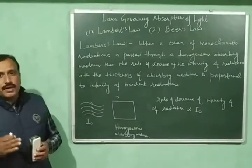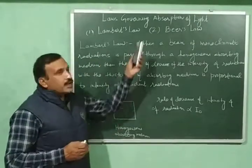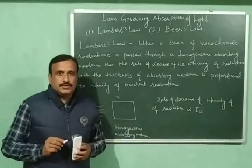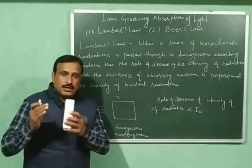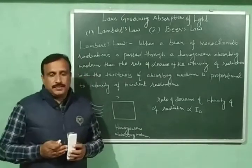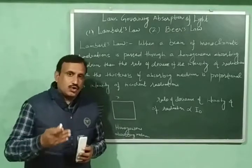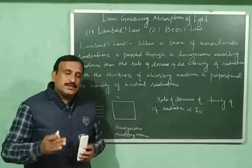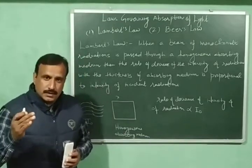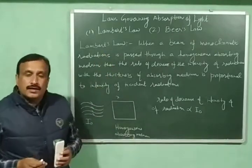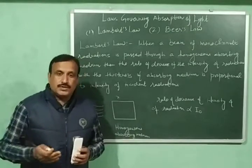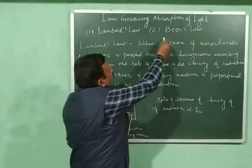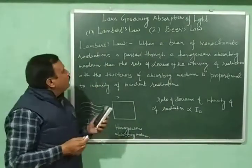Absorption of light is governed mainly by two laws. The first law is Lambert's law and the second one is Beer's law. When monochromatic light — meaning light consisting of a single wavelength — is passed through an absorbing medium, some photons of light are absorbed and the intensity decreases. This decrease of intensity passing through a pure homogeneous medium, such as pure liquids, is governed by Lambert's law, while decrease of intensity through solutions is governed by Beer's law.